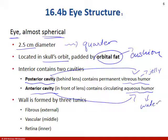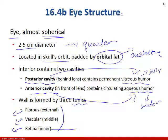The aqueous humor is more watery — you can tell by the name. There are three layers; remember tunica means layers. There's a fibrous outer layer, a vascular layer where we have blood supply in the middle, and then the retinal or retina layer which is more internal. This is where we're actually turning the light signal into an action potential.